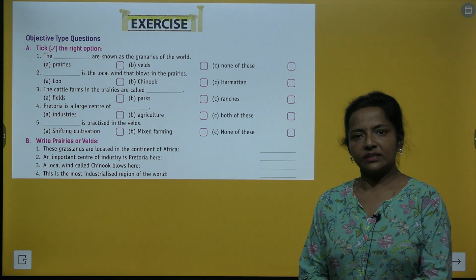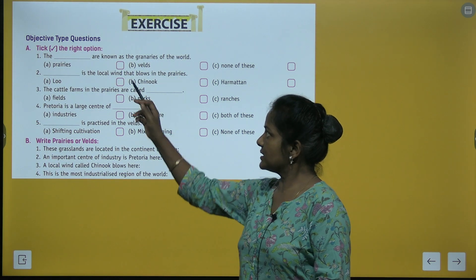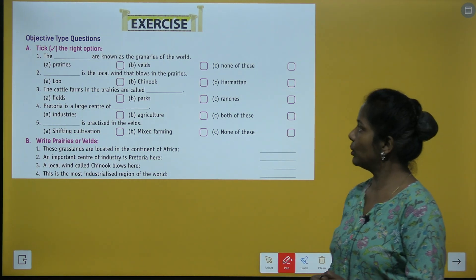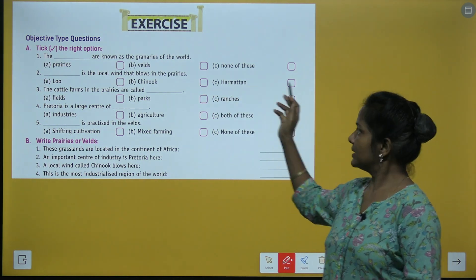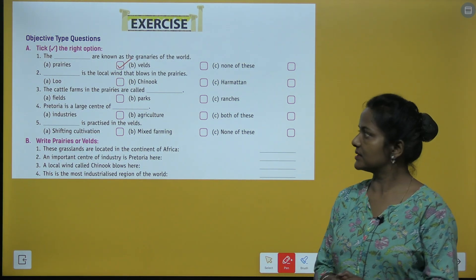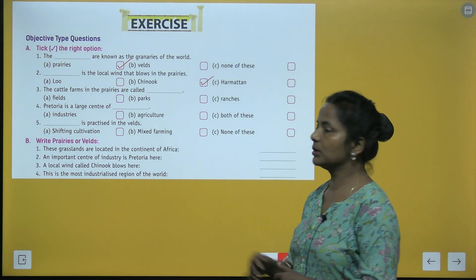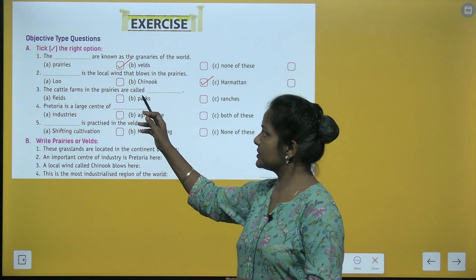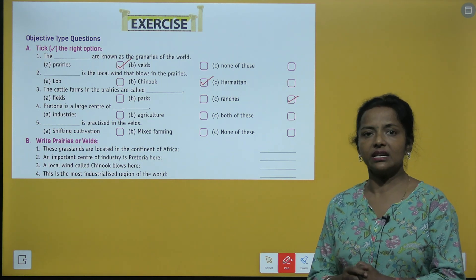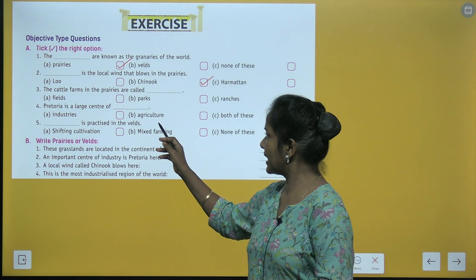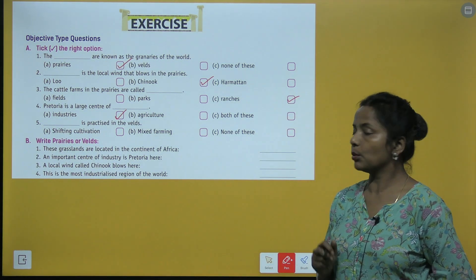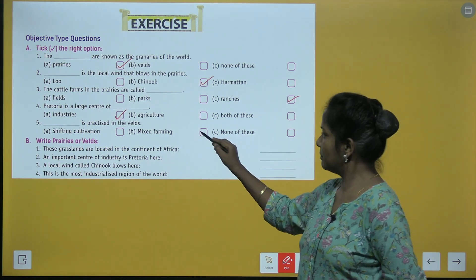Exercise — objective type questions: The prairies are known as the granaries of the world. Chinook is the local wind that blows in the prairies. The cattle farms in the prairies are called ranches. Pretoria is a large center of industries. Mixed farming is practiced in the velds.